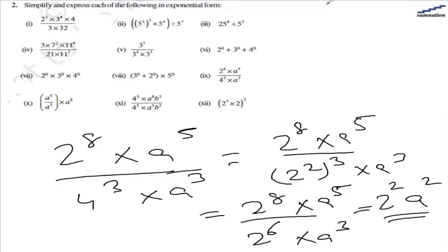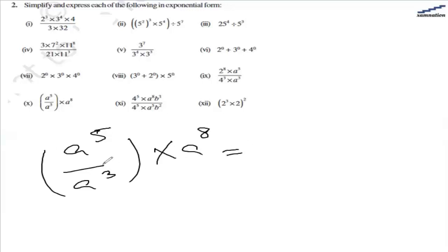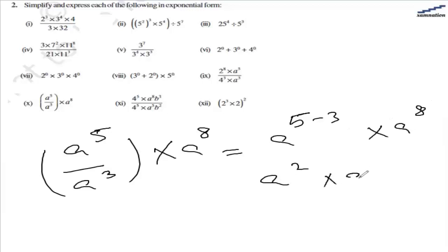In the tenth part, we have a raised to the power of 5 divided by a raised to the power of 3, and this result is getting multiplied by a raised to the power of 0. First let's solve the bracket: same base, so we subtract the powers — 5 minus 3 gives a raised to the power of 2. Now we have a raised to the power of 2 multiplied by a raised to the power of 8. Same base, so the powers add up, giving a raised to the power of 10 as the answer.